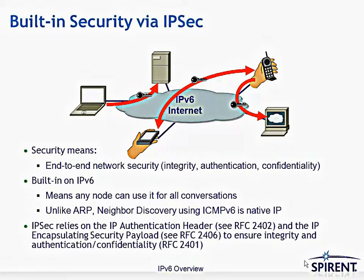IPv6 has built-in IPsec functions. The biggest issue with securing communications is that they must be truly end-to-end. With IPv4, certain protocols such as ARP did not use IPv4 and therefore could not be secured by IPsec. With IPv6, all control plane functions use an IP protocol — ICMPv6 — so they can truly be secured end to end using the same IPsec specifications RFC 2401, 2402, and 2406.